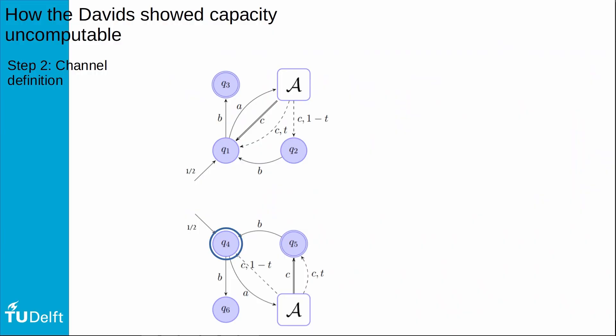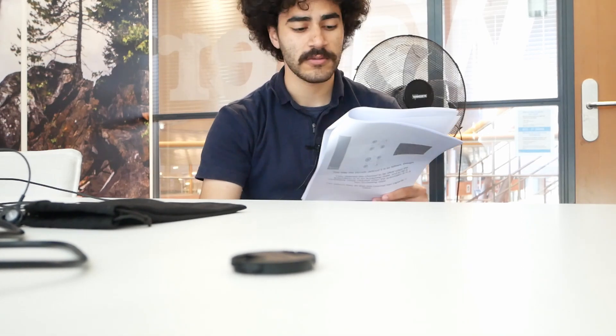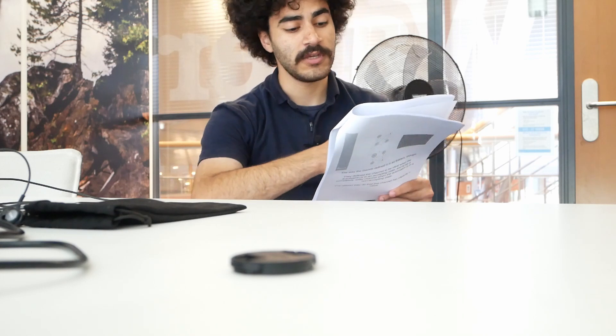You could say, for example, I will define the channel to be a bit flipped channel if the memory is in the state Q4. And I'm going to define it to be a completely noisy channel if the automaton here is in the state Q6. I'm going to define it to be whatever in this state and so on and so forth. You see? You could define any channel you want.